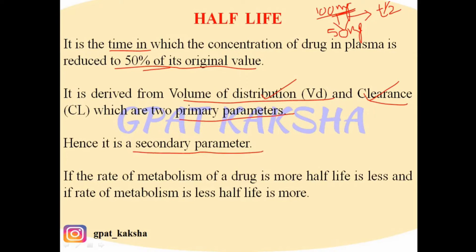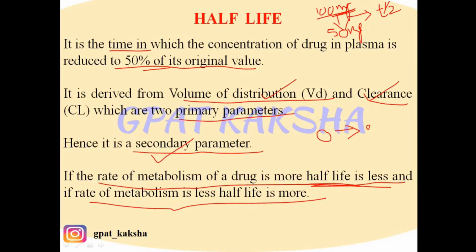If the rate of metabolism of a drug is more, half-life is less, because if a drug is metabolizing too fast, it will get depleted out of the body in a short interval of time. Conversely, if the rate of metabolism is less, then half-life is more — the drug metabolizes at a slow pace and takes a longer time to be depleted. So if metabolism is fast, half-life is short, and vice versa.